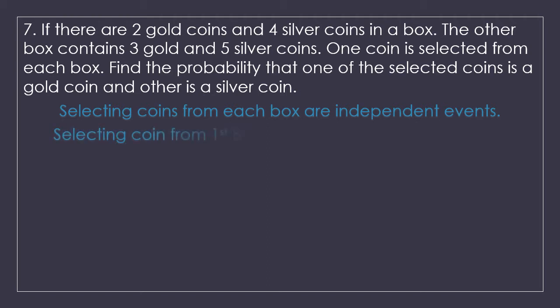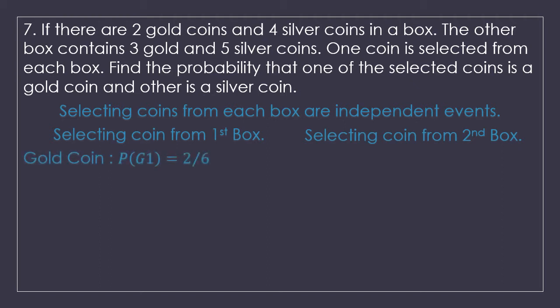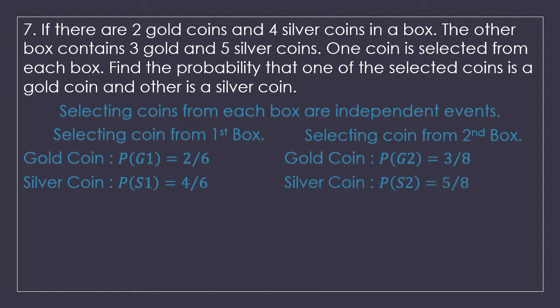I am bifurcating both boxes into selecting coin from the first box and selecting coin from the second box. Both boxes have two types of coins. For the first box, total coins are 6 and gold coins are 2, so P(G1) = 2 upon 6. P(S1) = 4 upon 6. For the second box, total coins are 8, 3 gold and 5 silver, so P(G2) = 3 upon 8 and P(S2) = 5 upon 8.